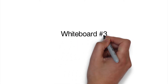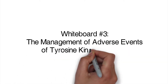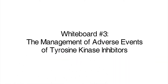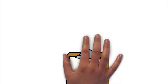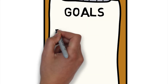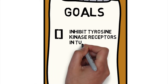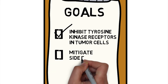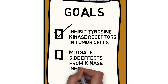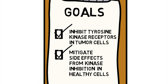In this whiteboard video, I will discuss common adverse events associated with the use of tyrosine kinase inhibitors, or TKIs, and how best to alleviate these side effects. While the goal of molecular-targeted agents is to inhibit receptor tyrosine kinases in tumor cells, the presence of tyrosine kinase receptors in healthy cells can result in side effects that must be mitigated during treatment with these agents.